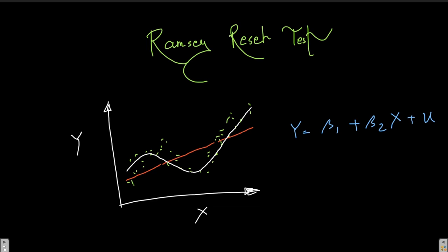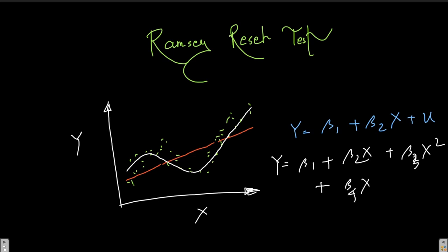Perhaps it is better to use a quadratic equation: y = beta1 + beta2*x + beta3*x² + beta4*x³, and so forth, where x can have a power of 4 as well. This is something we can do for a simple OLS with one variable.